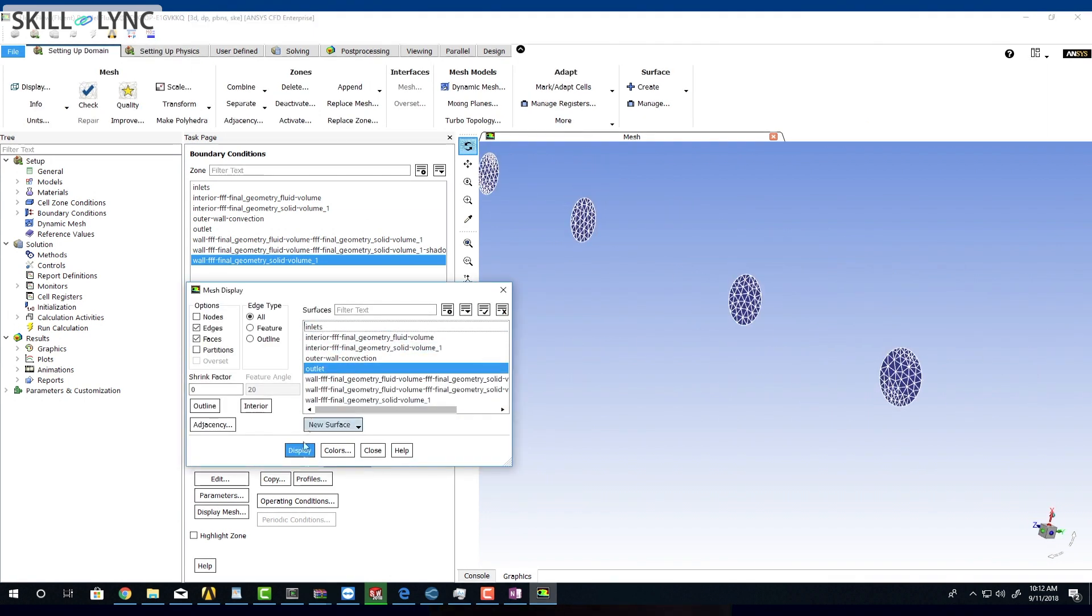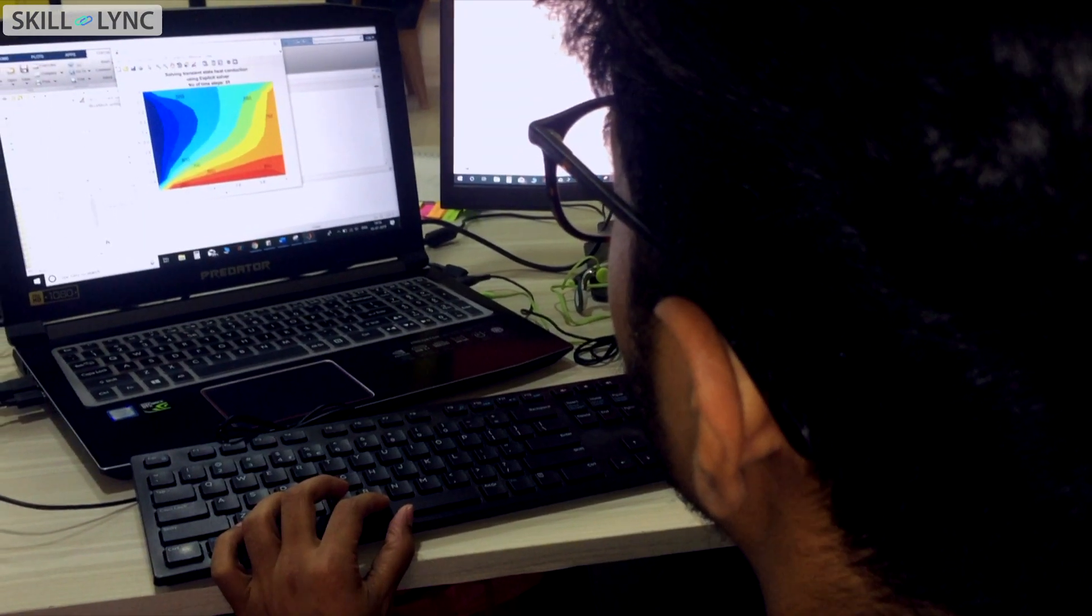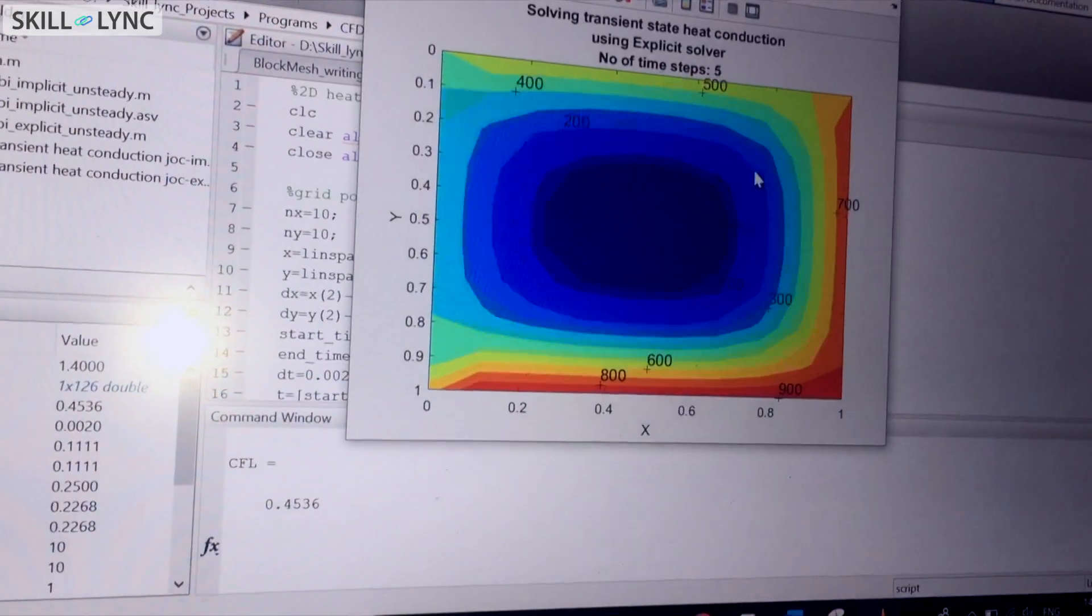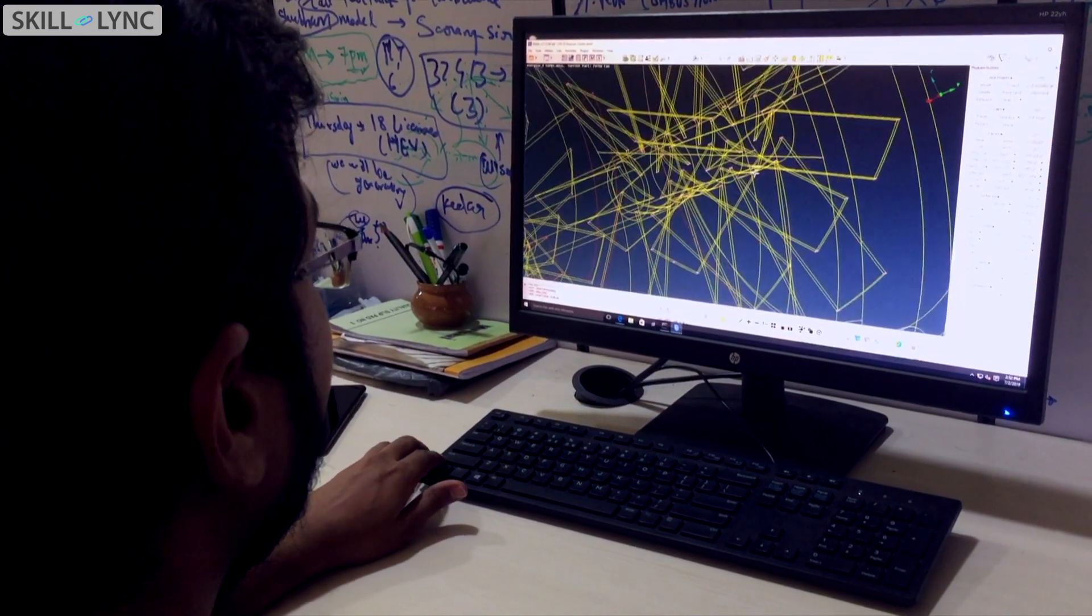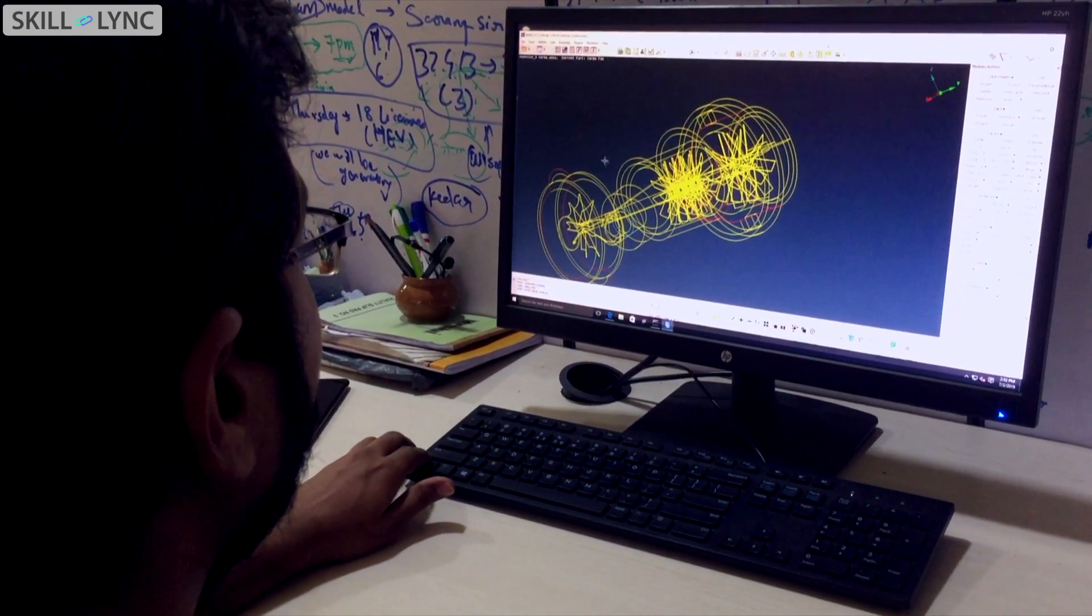meshing becomes harder. An engineer must possess strong foundation in mathematics and programming to create their own mesh generation tool. Now, in order to get into meshing, you need strong understanding of application tools like ANSA and Hypermesh, and you should